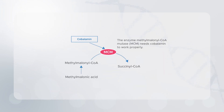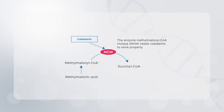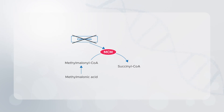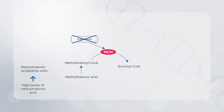The second process is where the enzyme methylmalonyl-CoA mutase converts methylmalonyl-CoA into succinyl-CoA. This process also needs the right form of cobalamin to work properly. When there is a problem with cobalamin metabolism, it can lead to another condition called methylmalonic acidemia, with high levels of methylmalonic acid in the blood, because methylmalonyl-CoA is not being converted into succinyl-CoA.